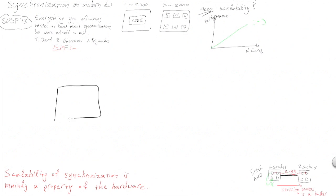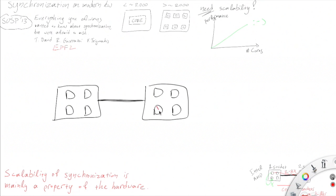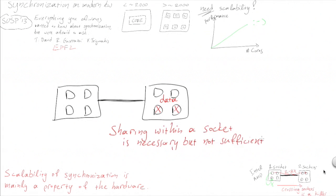Naturally, since synchronizing across sockets is super expensive, it's a good idea to explicitly put all heavy sharing within a single socket. Unfortunately, sharing within a socket is necessary but not sufficient to achieve scalability.